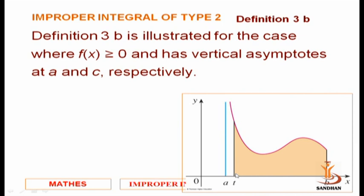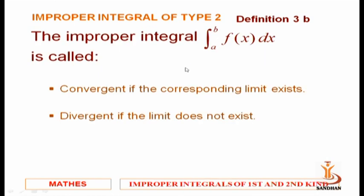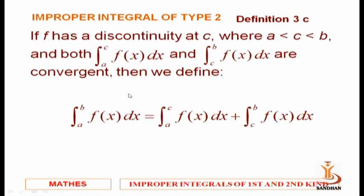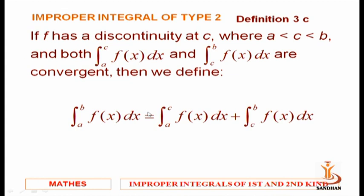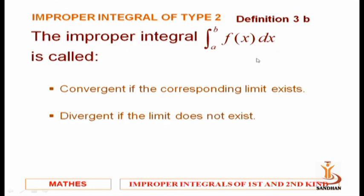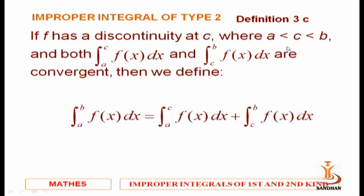Similarly, if at x equals a the function is not defined, we consider a plus something — a very small number, say delta. That gives the integral from a to b of f(x) dx equals the limit as delta tends to zero of the integral from a+delta to b of f(x) dx.